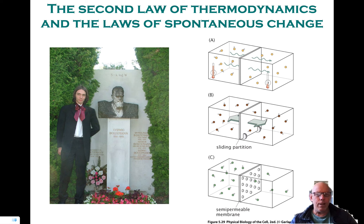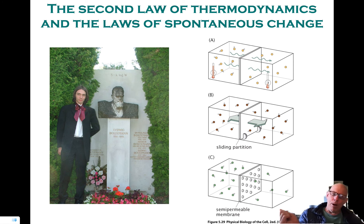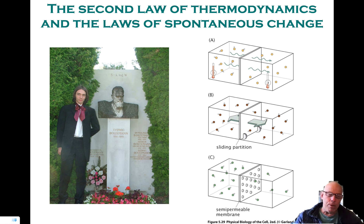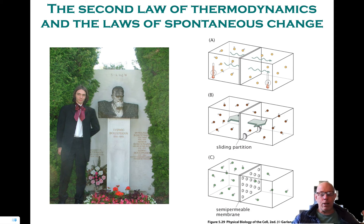The probability that all the molecules in this room end up on one side is that I got consecutively m heads. What's the probability of that? It's one half to the power m. In other words, where I place the molecule — left part of the room or right part of the room — is based upon flipping a coin. And so the probability is incredibly low that all the molecules would be on the right side.